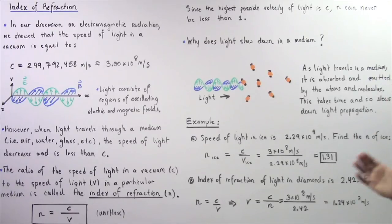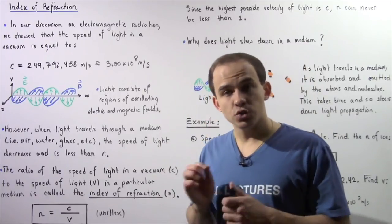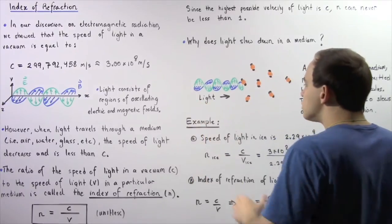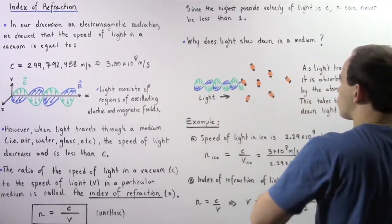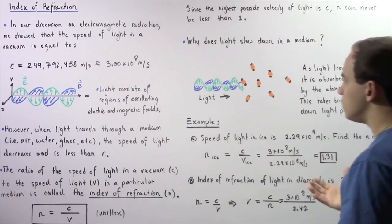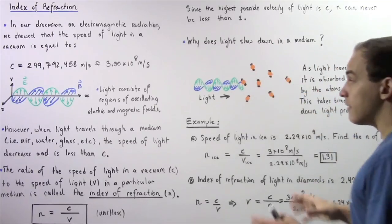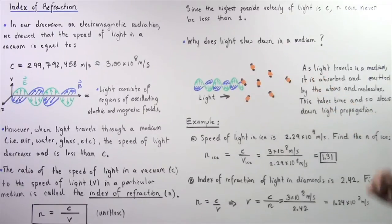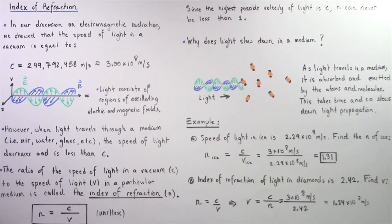Why exactly does light slow down inside a medium? Suppose we have a propagating light wave traveling in the positive direction along the x-axis in a vacuum, and it eventually enters a region consisting of molecules and atoms — our medium. A vacuum is a region of space with an absence of atoms and molecules. As light travels inside a medium, it is absorbed and re-emitted by the atoms and molecules, and because this absorption and re-emittance takes time, the speed of light decreases.